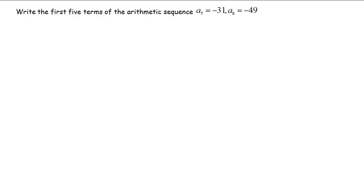I wanted to show you how to do this arithmetic sequence problem. This is kind of the tougher type of problem because they don't give you any initial information. Notice here it says a sub 5 equals negative 31 and a sub 8 equals negative 49.